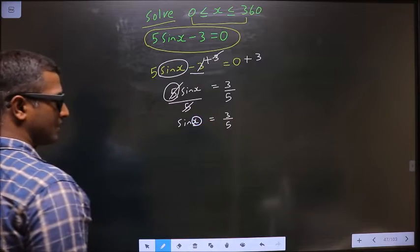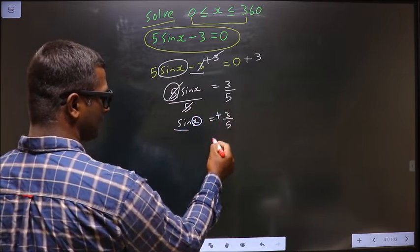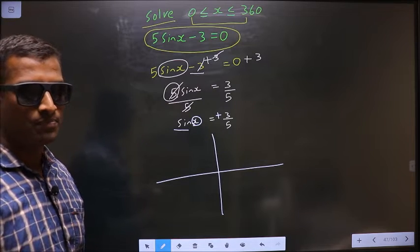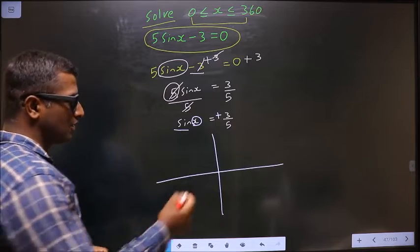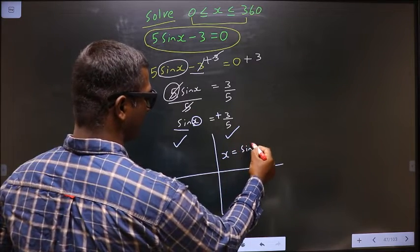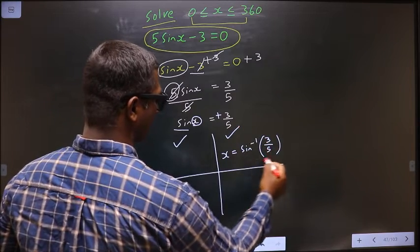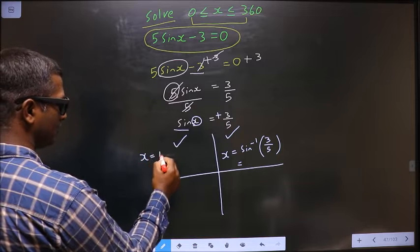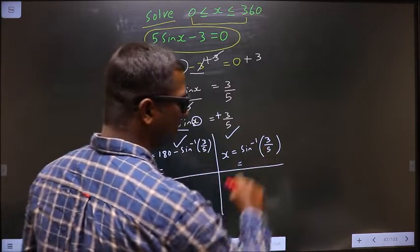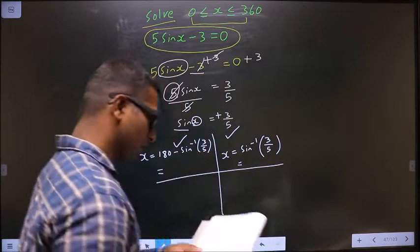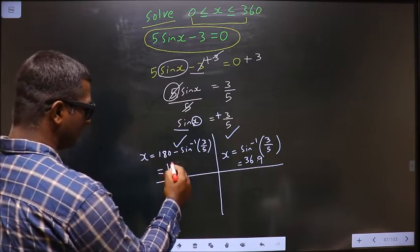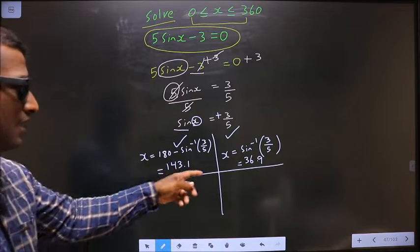Now to get the values for x: sin is positive here, so check in which quadrants sin is positive. Using the rule — all, sin, tan, cos — sin is positive in the first and second quadrants. To get an angle in the first quadrant, do sin inverse of 3 by 5, which gives 36.9 degrees. To get an angle in the second quadrant, do 180 minus sin inverse of 3 by 5, which gives 143.1 degrees. These are the answers.